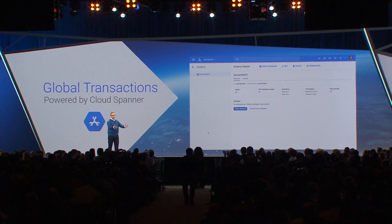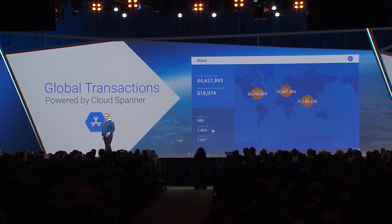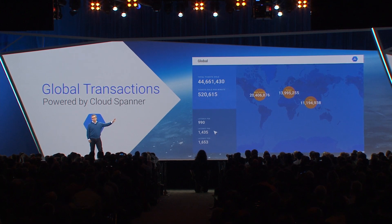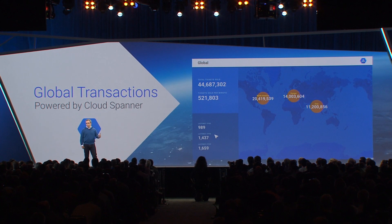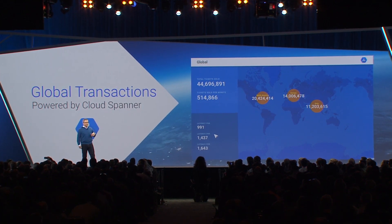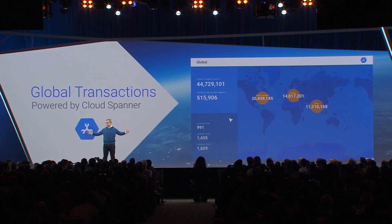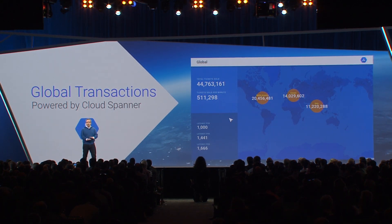But that's just getting started. Let's look at Spanner in an actual real-world scale example. Imagine you're a ticket seller — you want to sell tickets to events worldwide, to customers worldwide. It's pretty important that you sell a ticket once and only once, and it's also pretty important that customers get a good performance experience wherever in the world they are. In this example, we've deployed Cloud Spanner into three Google regions — US, Europe, and Asia — all connected by that private network that Urs told you about.